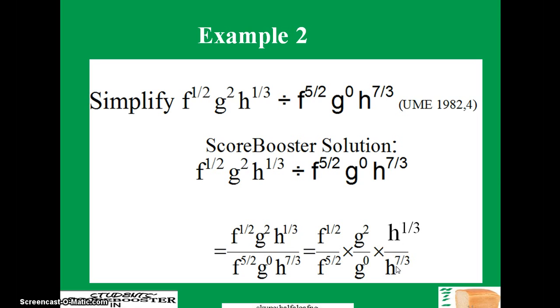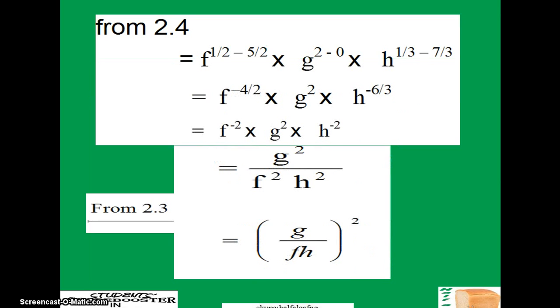Now begin to apply appropriate laws. So from 2.4, when you have division it means you are going to subtract. So that's why we have f to the f minus 5 over 2, times g to the 2 minus 0, and times h to the 1 over 3 minus 7 over 3. So what do you have when you subtract f from 5 over 2 you get this, 2 minus 0 get this one, 1 over 3 minus 7 over 3 you get this one.